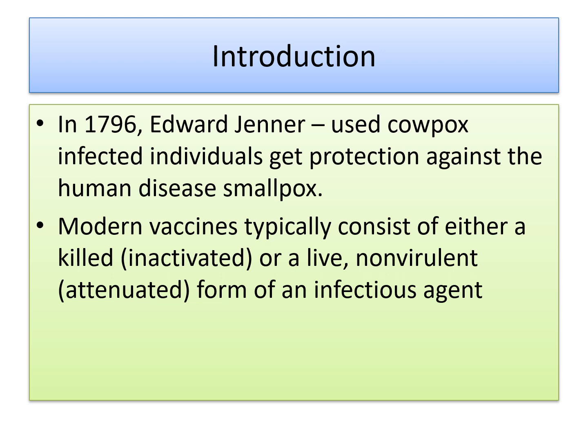Modern vaccines typically consist of either a killed or a live non-virulent form of an infectious agent. The killed form can be called inactivated, and the live non-virulent form can be called attenuated. These are the two important types of vaccines prevalent until recently — some 10 to 15 years ago. Now we have different types of vaccines, and COVID has paved the way for different types of vaccines to be available in the market for emergency purposes.